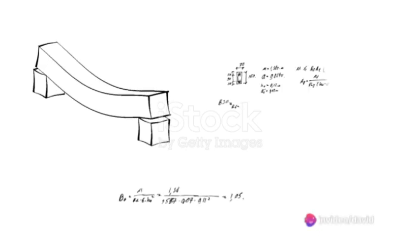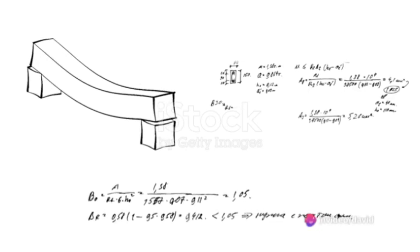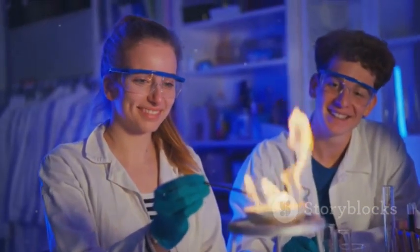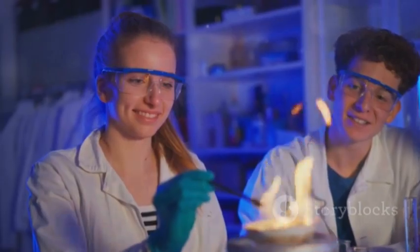Tafel slope, in essence, is a measure of how the rate of these transformations changes with the applied voltage. It helps scientists predict how quickly a reaction will occur under different conditions.